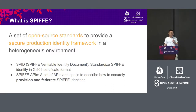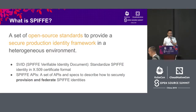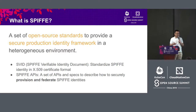Next is about SPIFFE. SPIFFE is basically a set of open source standards that help you build a secure production identity framework in a heterogeneous environment like Istio, VM, Kubernetes, on-prem, and other environments. SPIFFE standards include two parts. First, SVID — that defines what a SPIFFE identity is and how it is presented in the X.509 certificate. Second, SPIFFE APIs — that describe how to securely provision SPIFFE identity to each workload from a certificate authority, and how to federate identities provisioned from different certificate authorities.